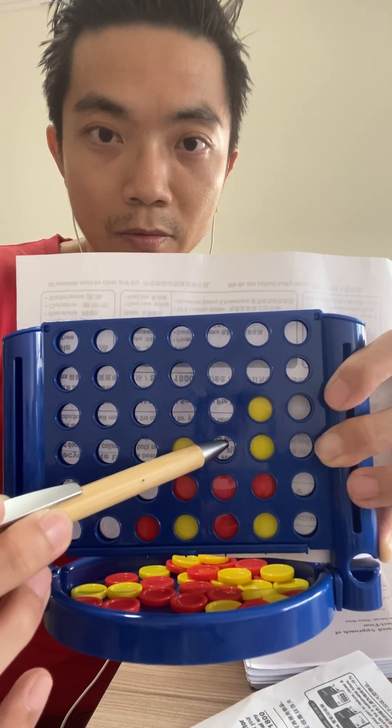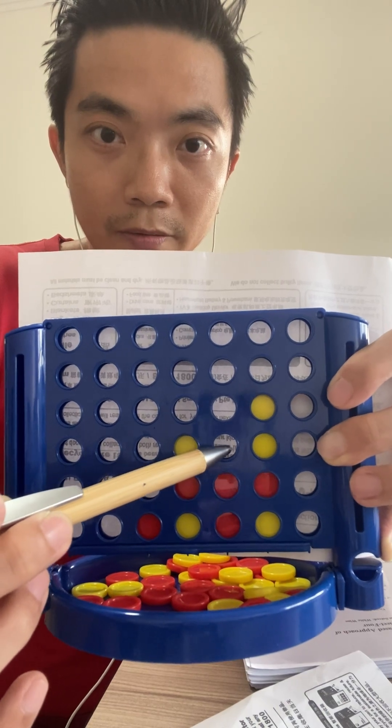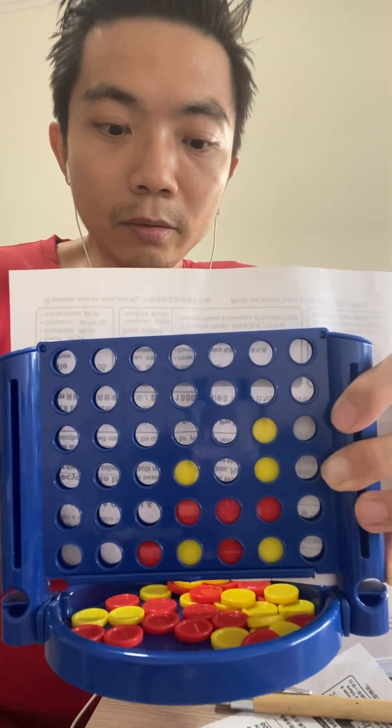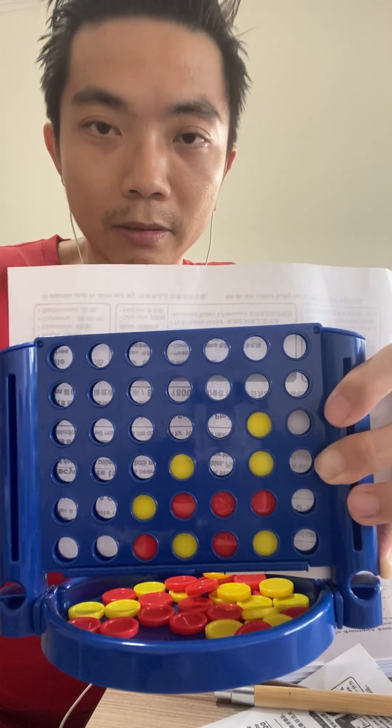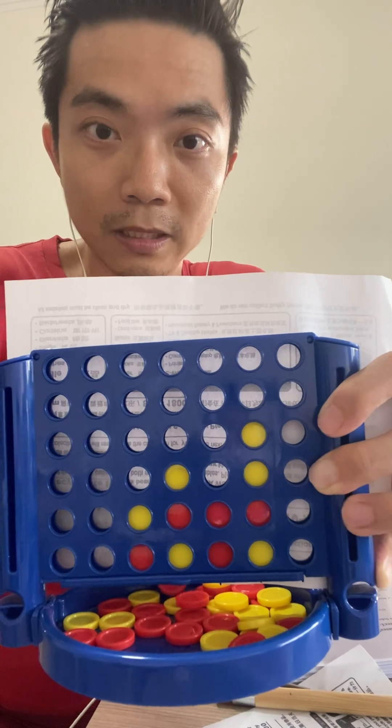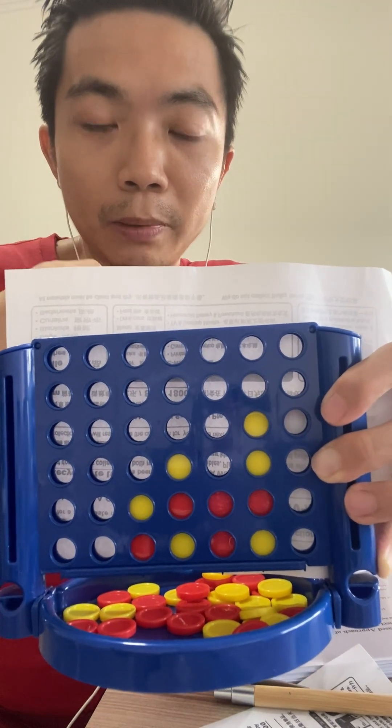Can you see? Which will be over here. So the yellow player has no choice but to block the winning check here, which is a forced move on my part. So for me as a red player, what can I do?